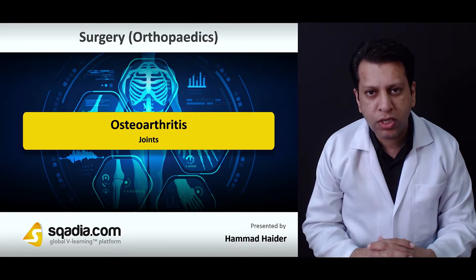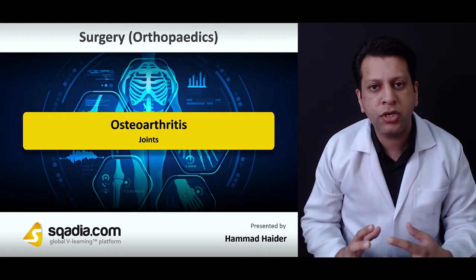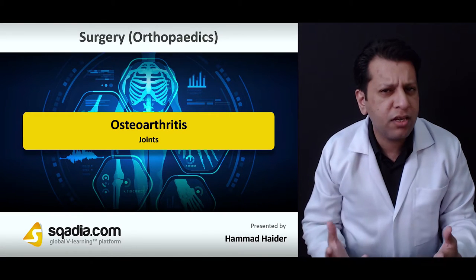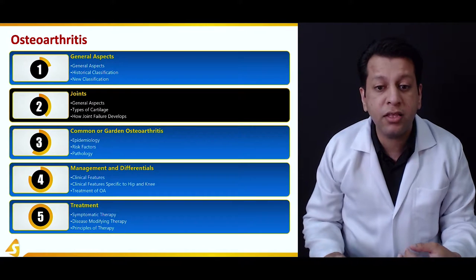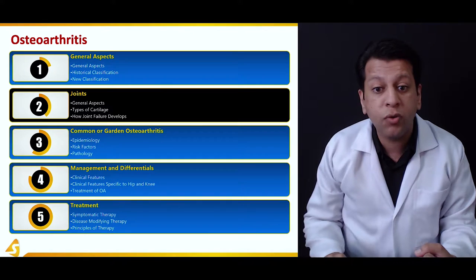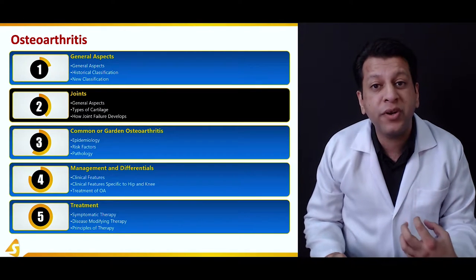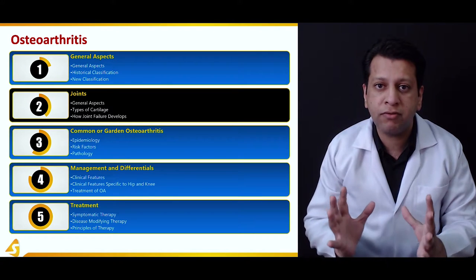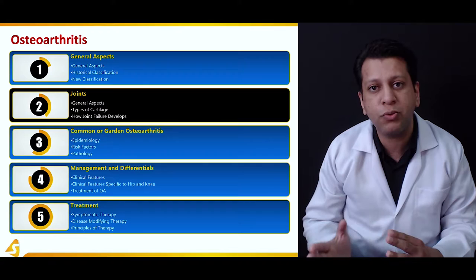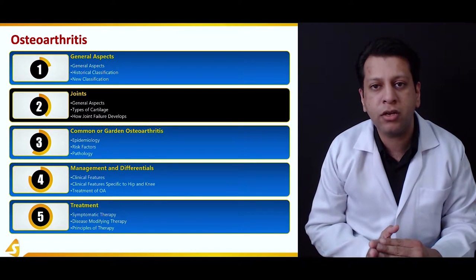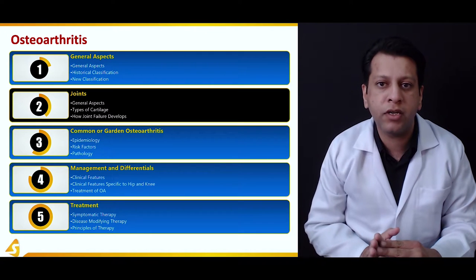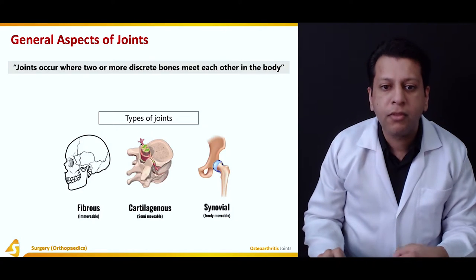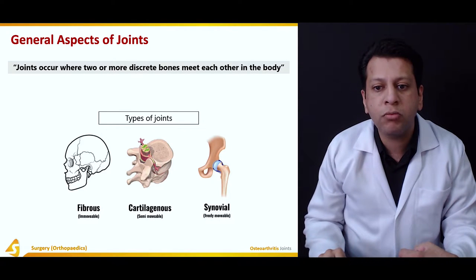Hello everyone, you are watching scadia.com and we are on osteoarthritis. We'll be discussing joints, going through the general aspects and anatomy of joints, the types of joints and cartilages, and how joint failure develops. If we understand the pathogenesis of joint failure, we can understand osteoarthritis, because osteoarthritis is a sequel of joint failure. Once the joint fails it's unable to take the load of the body during normal activities of daily life, resulting in lysis and changes which eventually lead to pain and deformity.